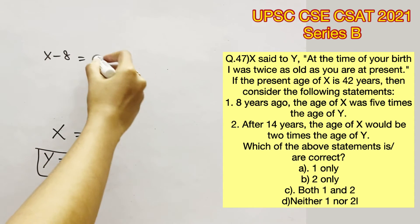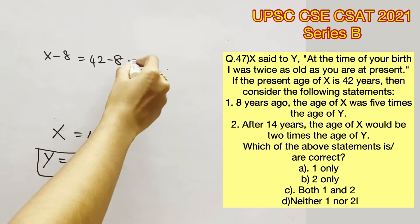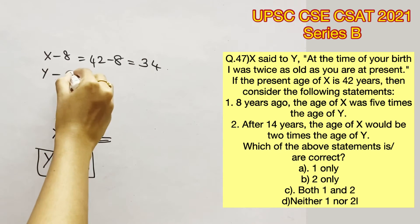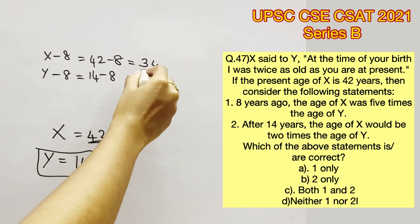First statement says, 8 years ago, X was 5 times the age of Y. Since X is the present age, 8 years ago, the age of X would have been 42 minus 8, which is equal to 34. In the same way, Y would have been 14 minus 8, which is 6.